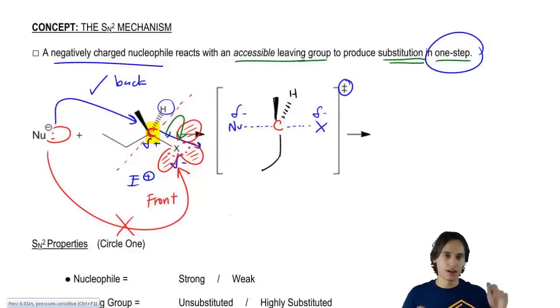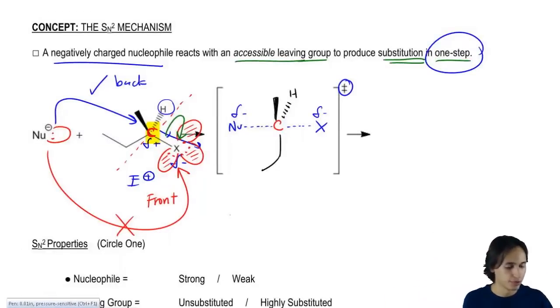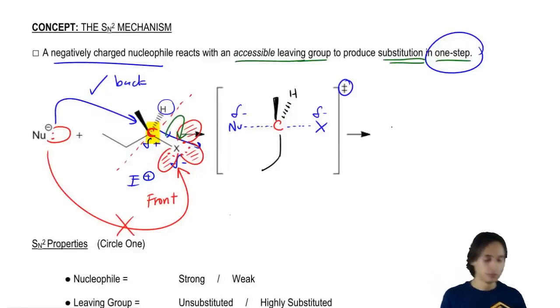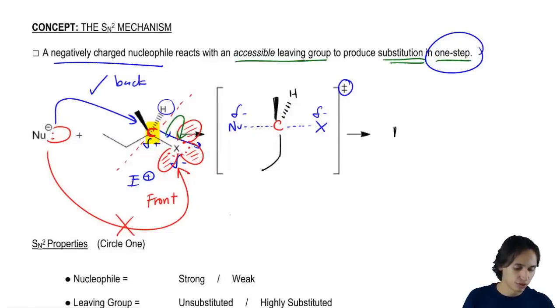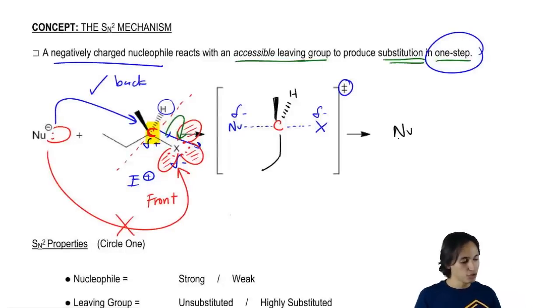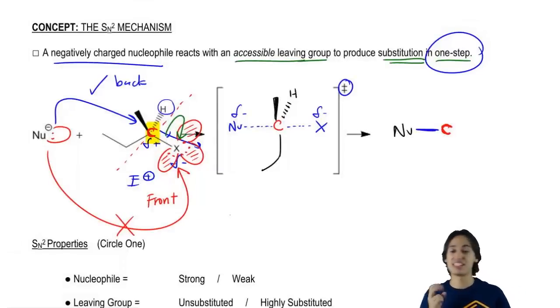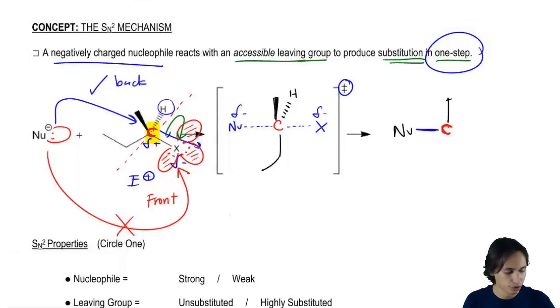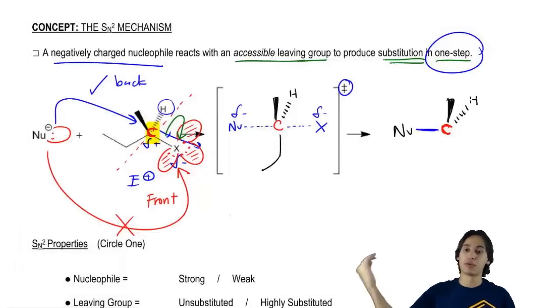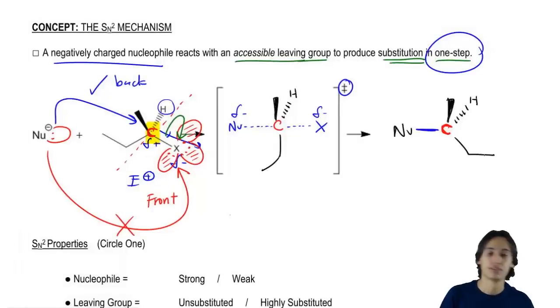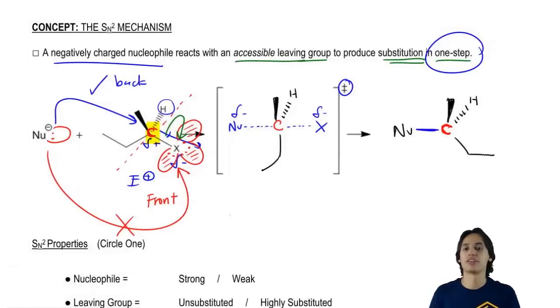After this reaction is done happening, after it's all completed, all happens at one time, now I have to figure out what my products are going to look like. Well, what I'm going to have now is my nucleophile. But now my nucleophile is going to be attached with a single bond. I'll draw it in blue because that indicates the arrow that was just made to that red carbon. And what is that red carbon going to be attached to? The same three things it was attached to before. So it's going to have that methyl group. It's going to have that hydrogen. And now the ethyl group, because the nucleophile came from the back, my ethyl group is getting pushed towards the front. So that's going to be important. Let's just hold on to that thought. On top of that, is there anything else that we need to draw?